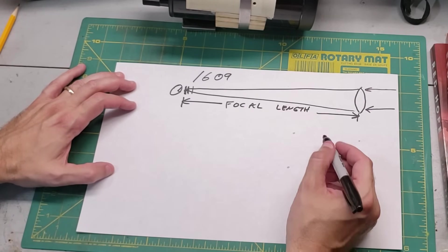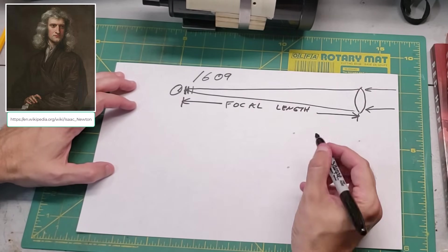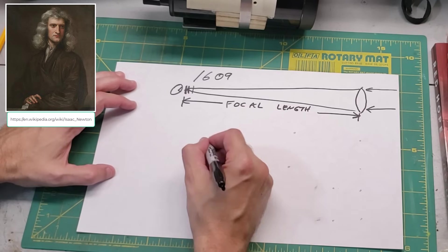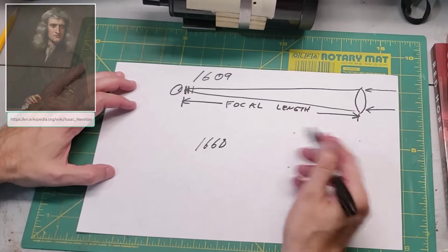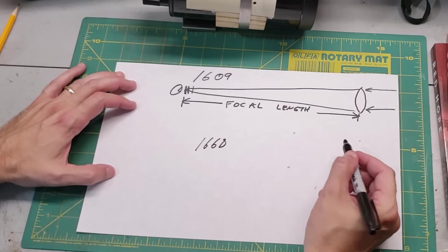Now to fight this, a guy named Sir Isaac Newton, this guy about 60 years after Galileo (around 1668), came up with his own way to build a telescope that got around the problem of the glass lens.